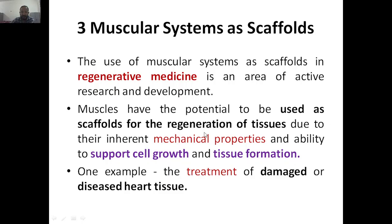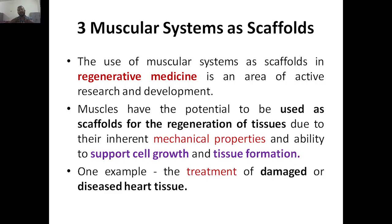Muscles have the potential to be used as scaffolds for regeneration of tissues due to their inert mechanical properties and ability to support cell growth and tissue formation. What are the scaffold properties? Mechanical support, and it should support cell growth and tissue formation — all these properties our muscles have got. Muscles have got the potential to be used as scaffolds for regeneration of tissues. The mechanical properties and the ability to support cell growth and tissue formation are the key reasons we use muscles. We are having mechanical properties in muscles, and muscles can support cell growth and tissue formation.